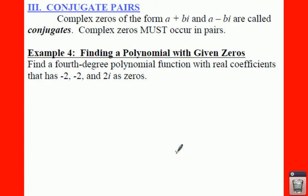So for example 4, it says we have a fourth degree polynomial function with real coefficients that has negative 2, negative 2, and 2i as zeros. Well, if you have a degree of 4, you should have 4 zeros.